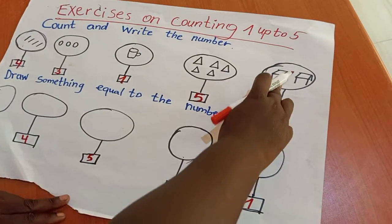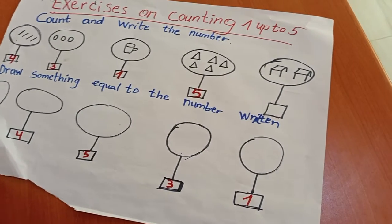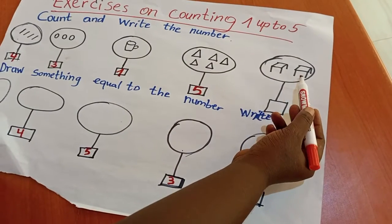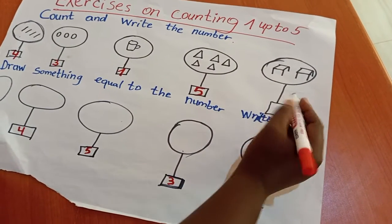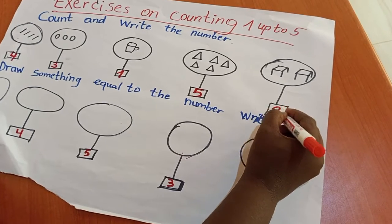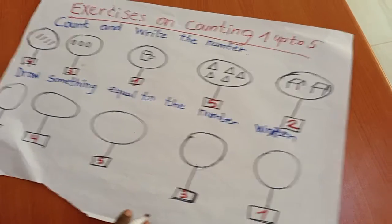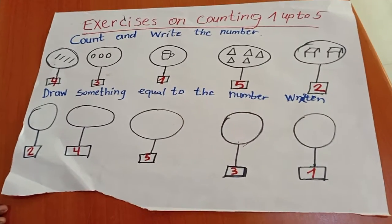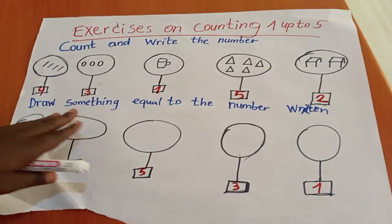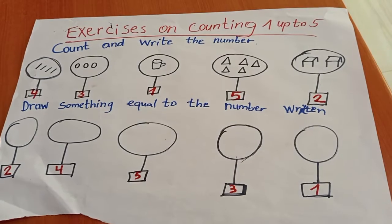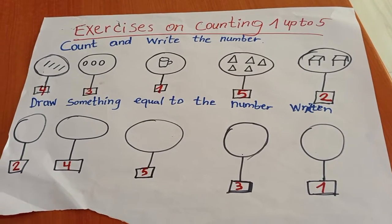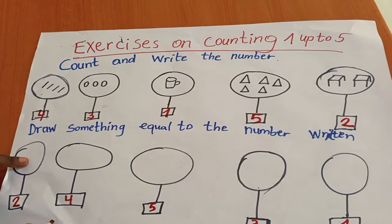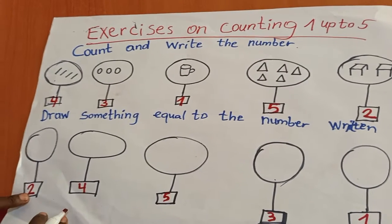Here I have tables. I am going to count them. One, two. These are equal to number five.